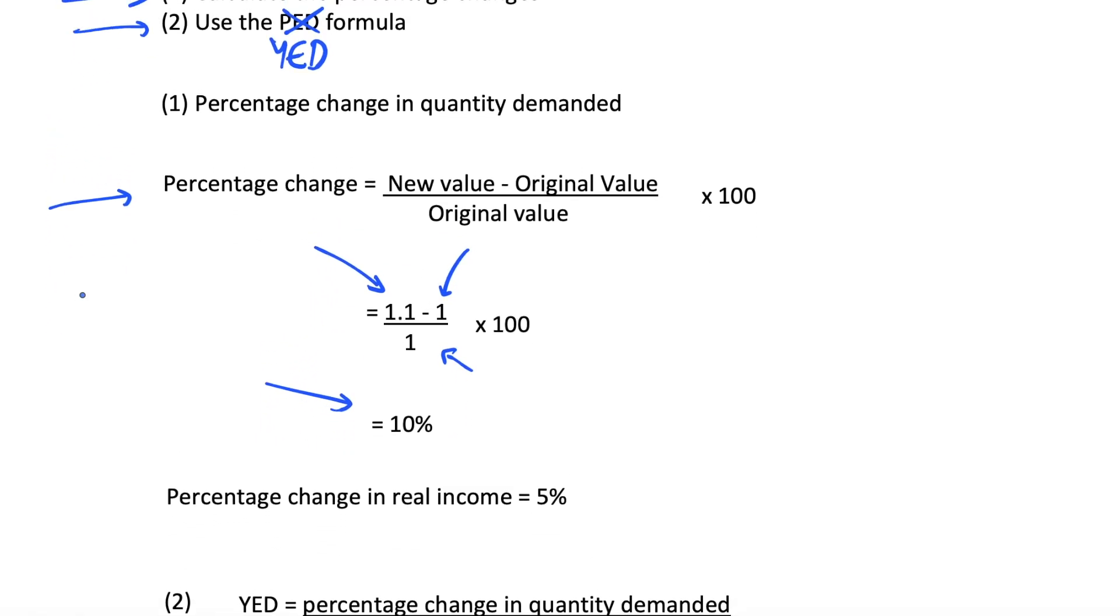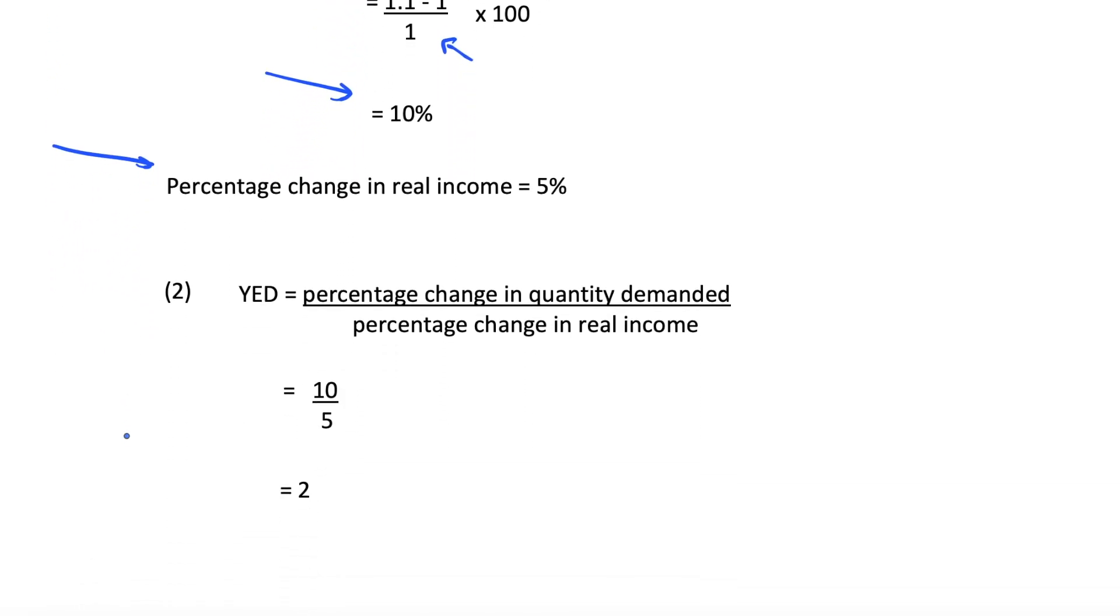We were already given that our percentage change in real income was 5%. Then we just substitute that into the YED formula: percentage change in quantity demanded divided by percentage change in real income. Remember that quantity demanded is on the top, as is the same with all elasticities. So it's 10% divided by 5%.